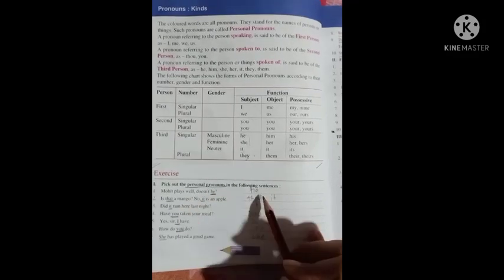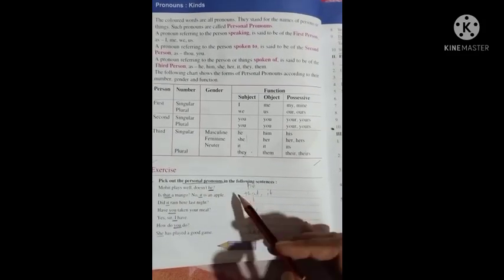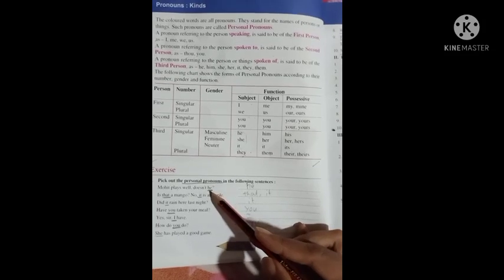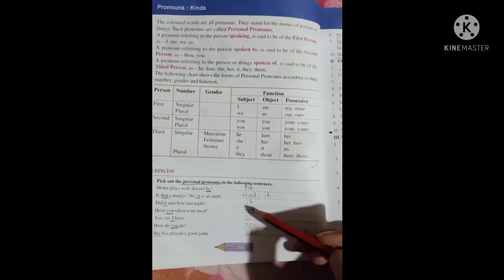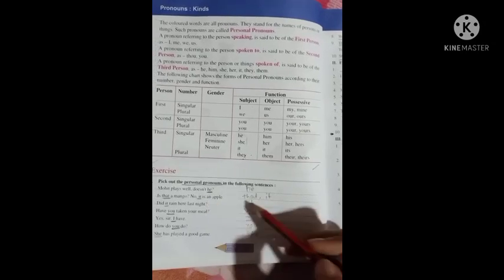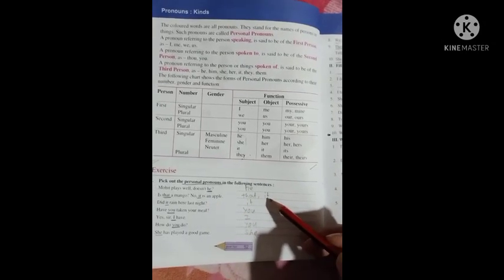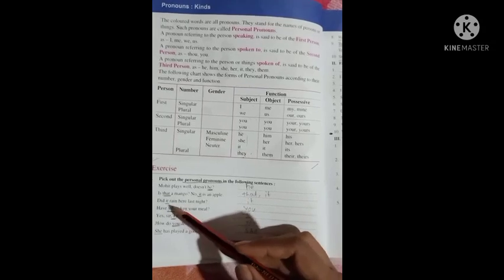Look, I have done this here. He - he is a pronoun. Is that a mango? That is a pronoun. No, it is an apple. It - it is a pronoun. Did it rain here last night? It.